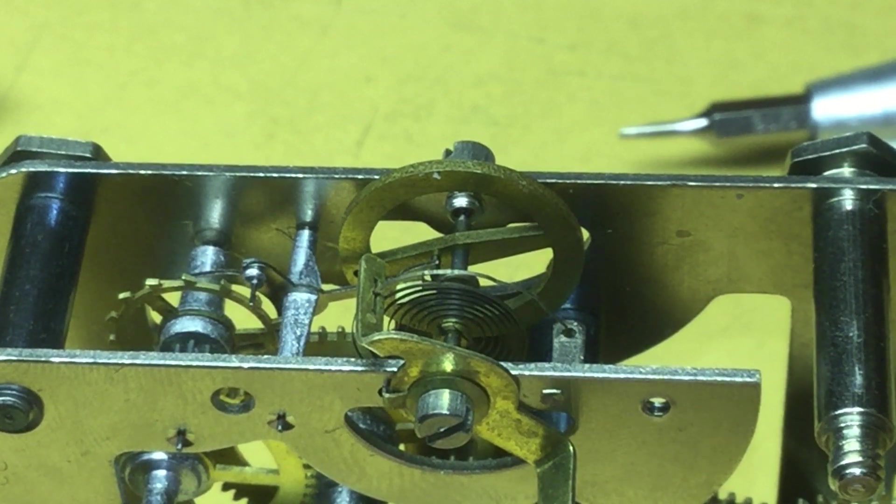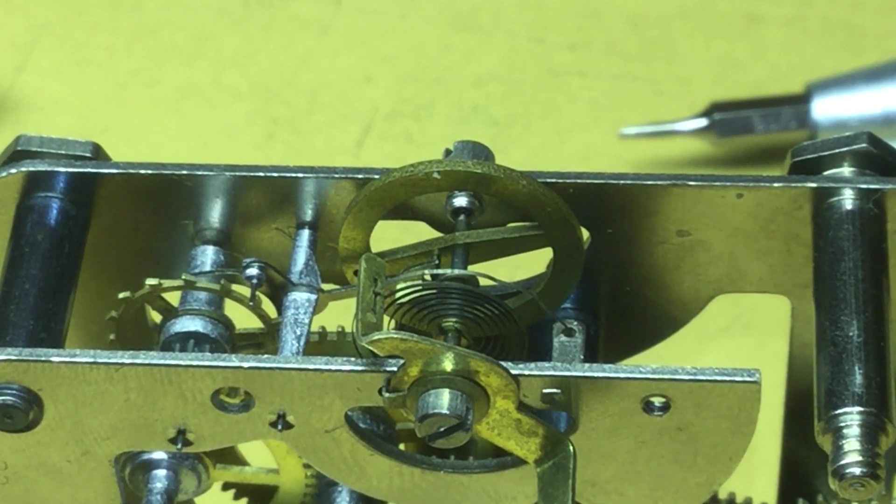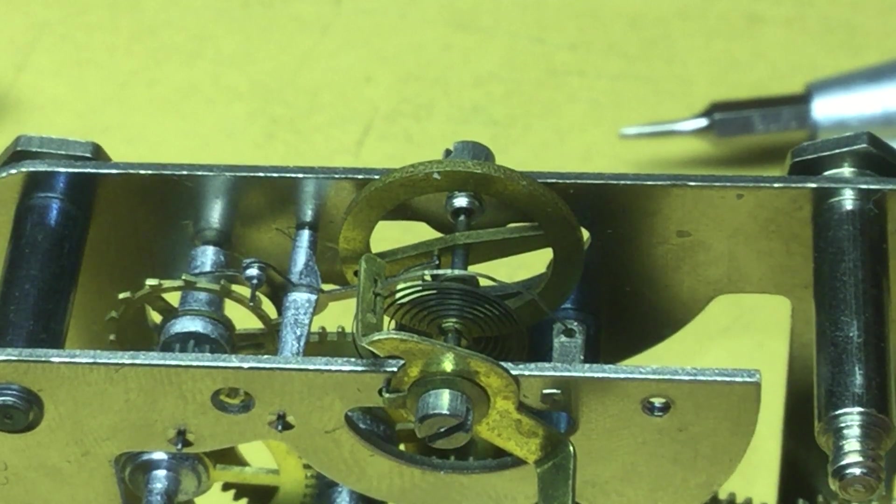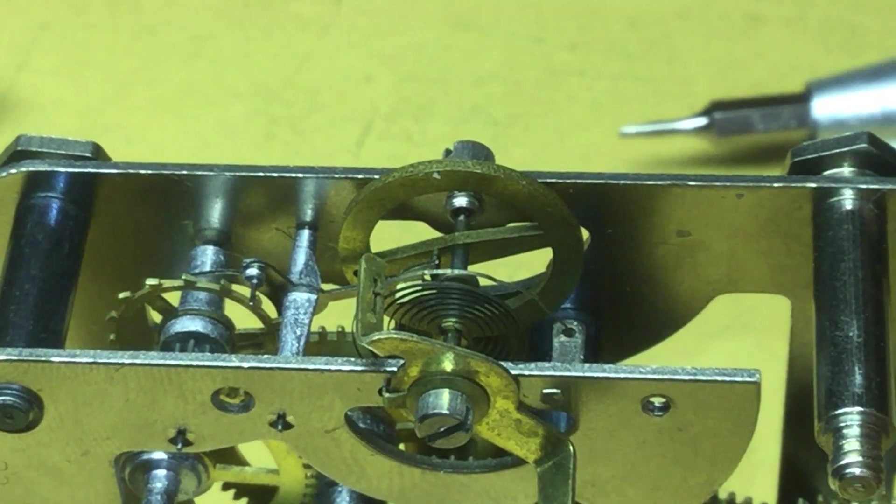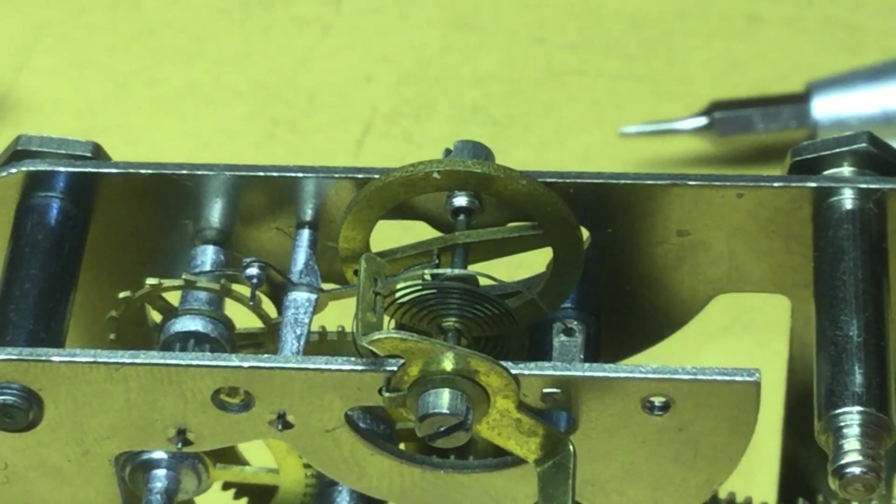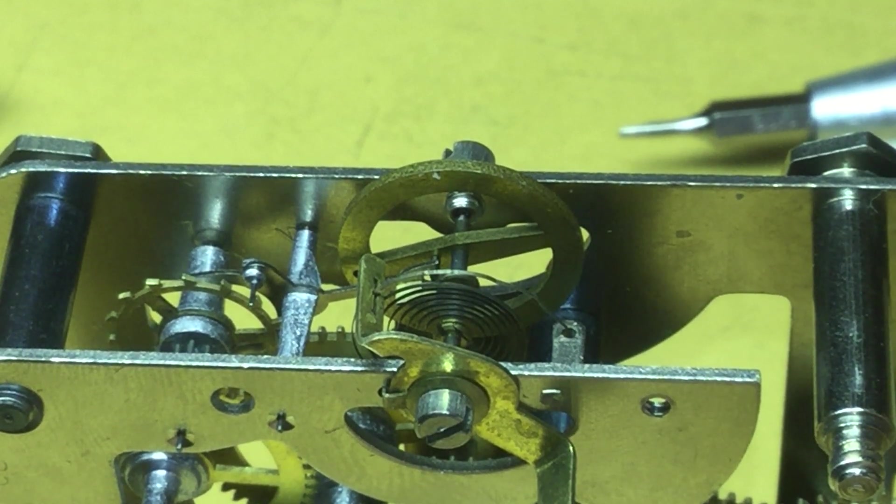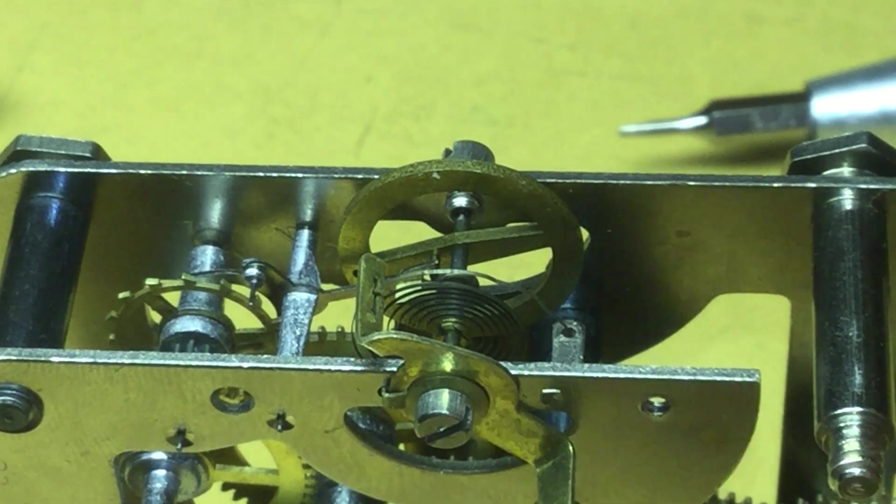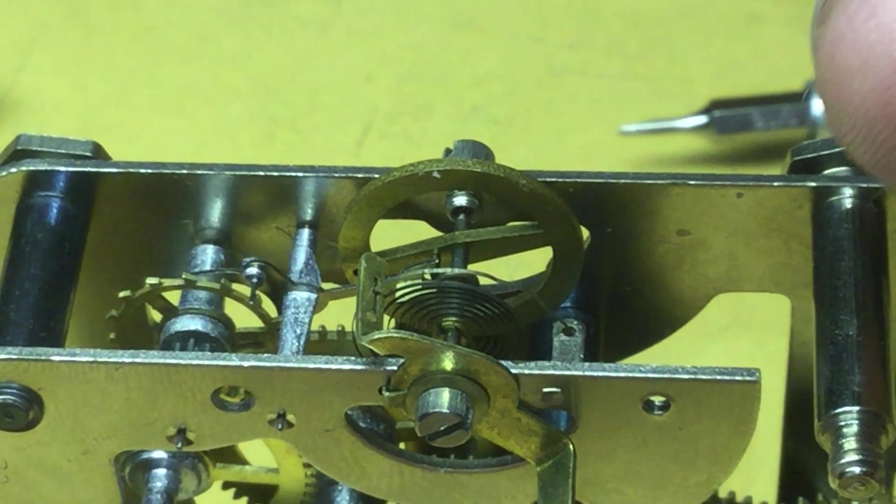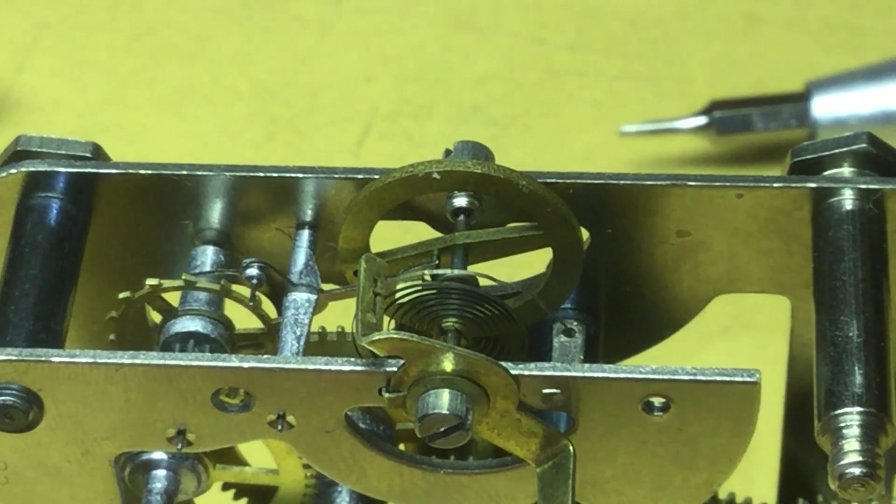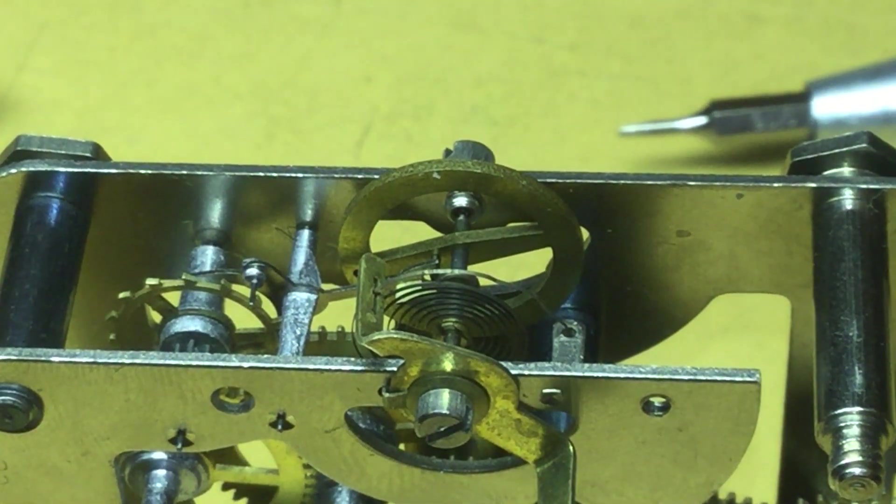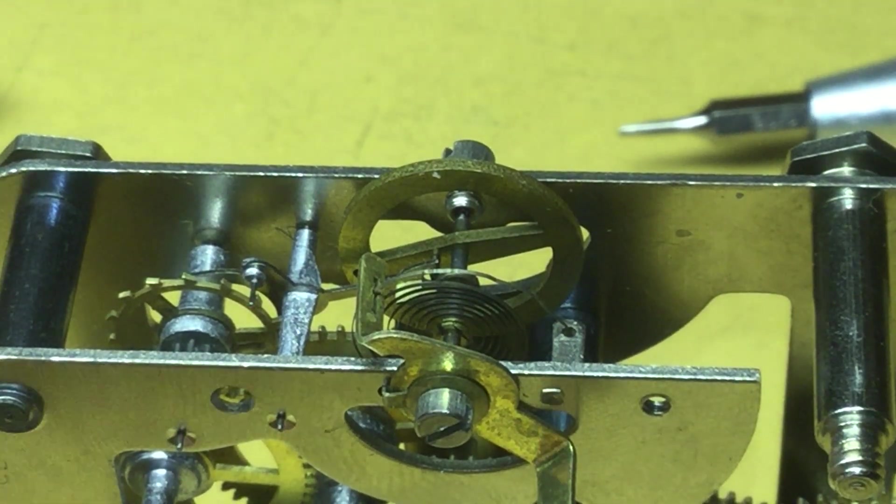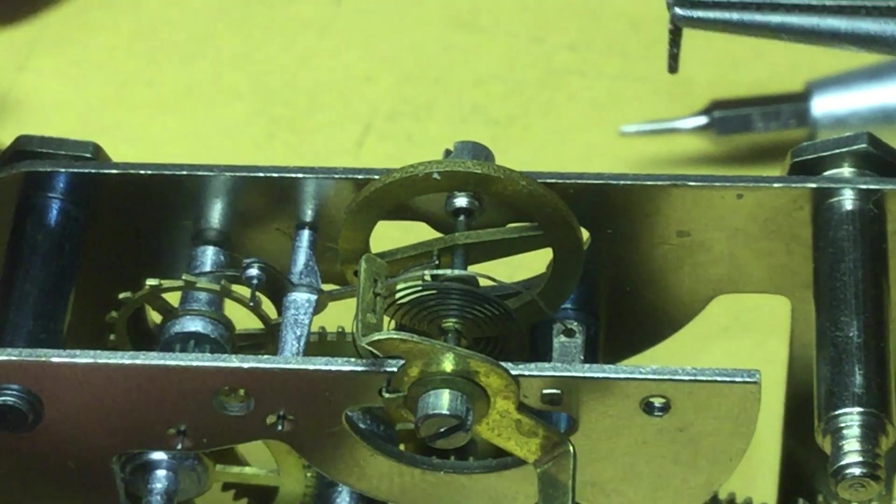And then find the taper pin that holds the hairspring to the stud. And if you lose it, then that's what taper pin assortments are for, so you can make a new one. It is not wanting to pick up with the pliers that I used to remove it. There's our taper pin.